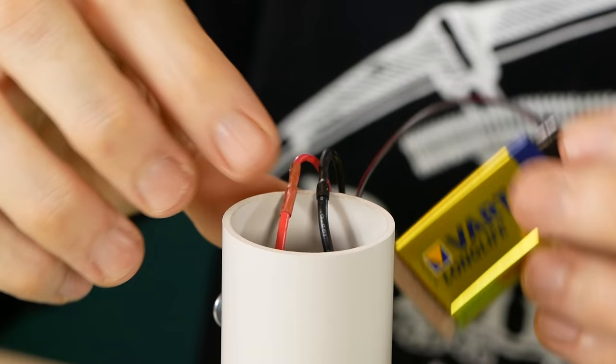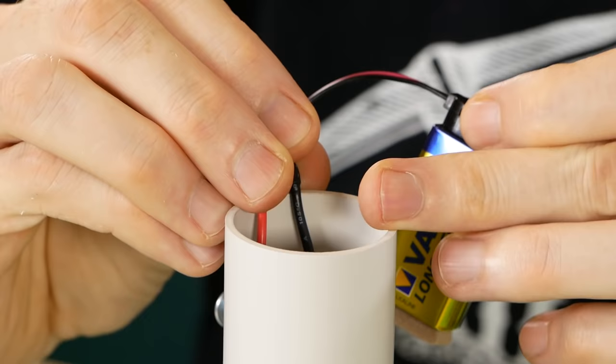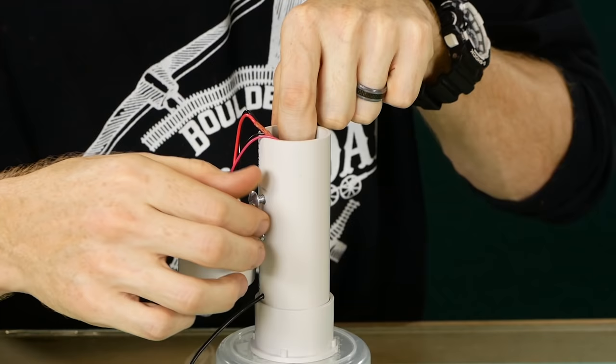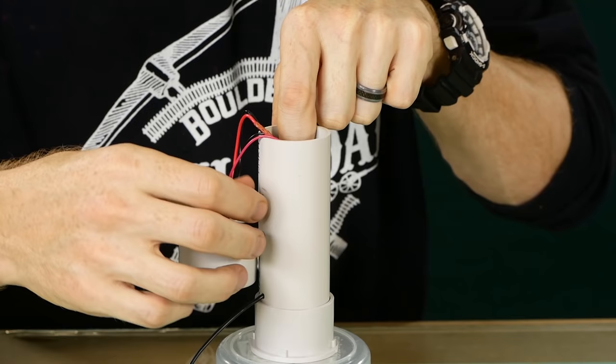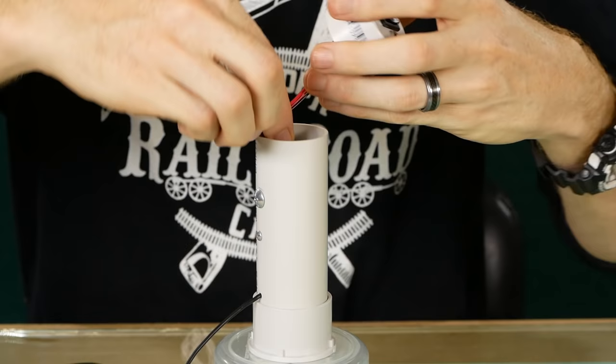Now just connect the battery and carefully slide it down into the handle. Tighten the screw so the battery is held in position and press the lid onto the handle.